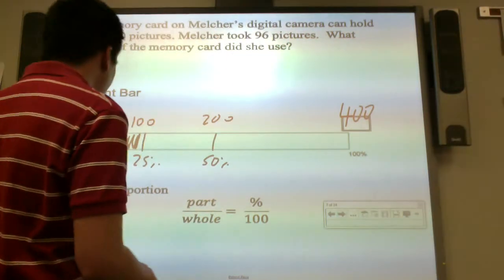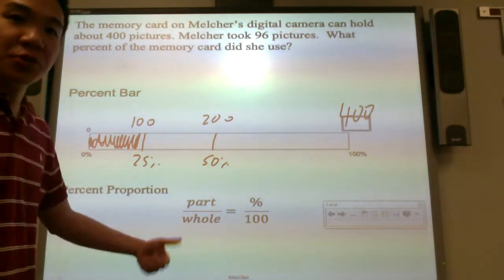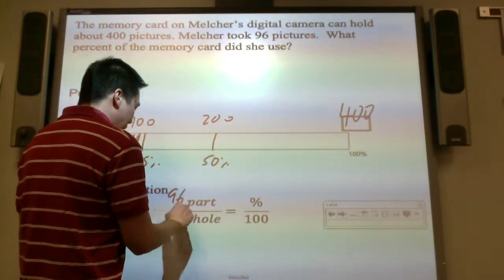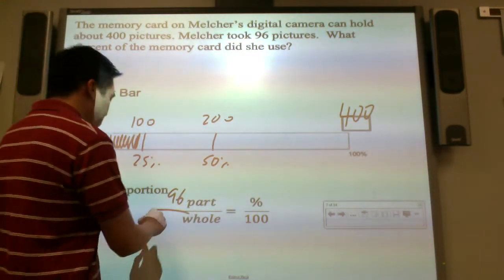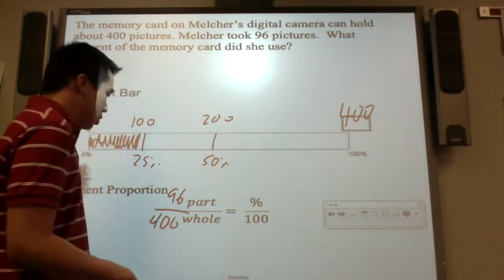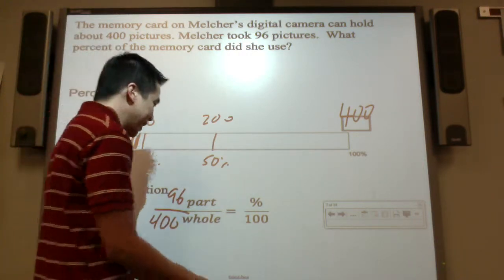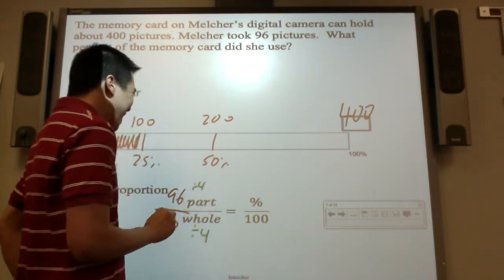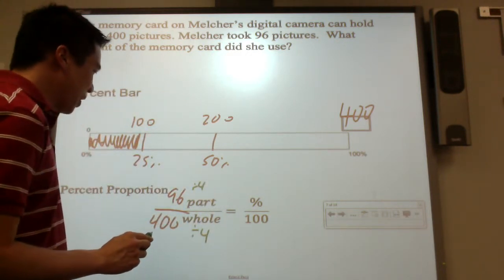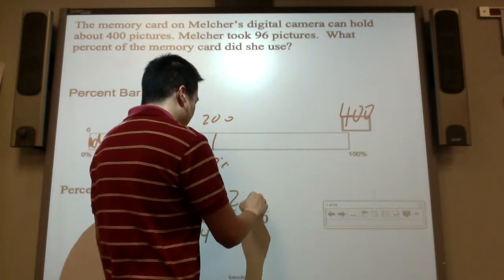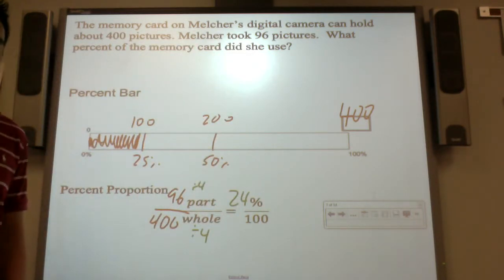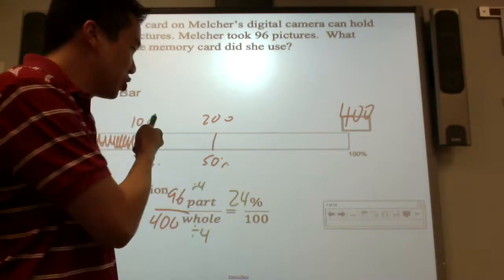I'm going to use the percent proportion. We know it's 96 pictures out of 400 pictures. Do we build it up or break it down? We need to break it down by 4. What's 96 divided by 4? I believe it's 24%. So it is correct. I guessed 23, 24, and it was 24%.